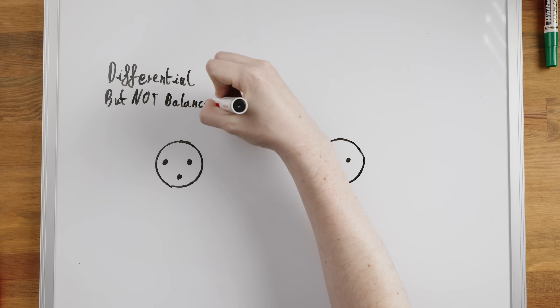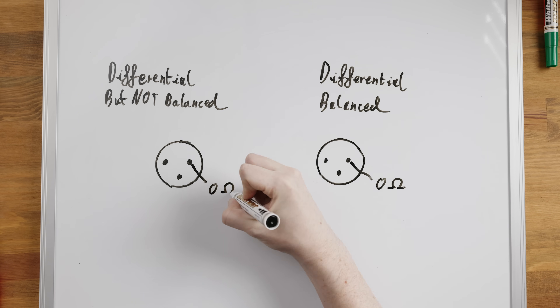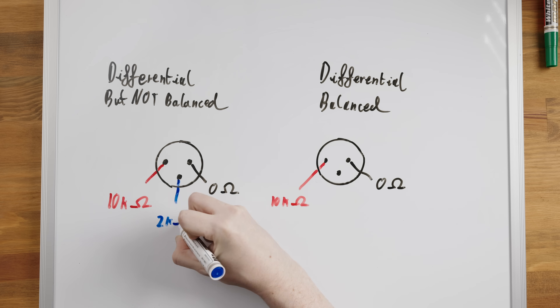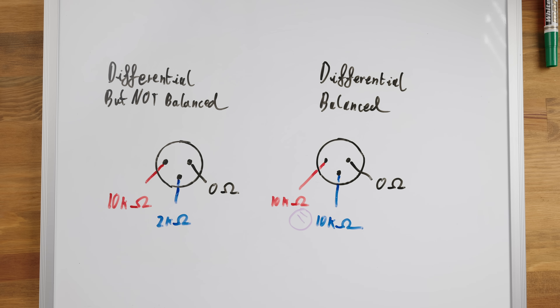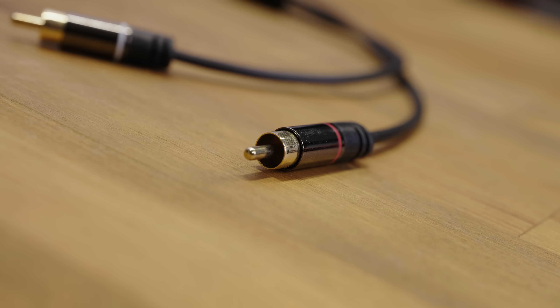Balanced versus unbalanced, on the other hand, describes whether the two conductors being used have identical impedances to ground, and we'll talk about why that's important with some examples. Let's look at a typical single-ended and unbalanced connection.